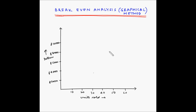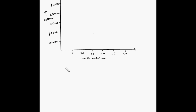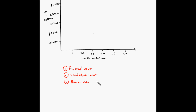Let us look at the break-even analysis using graphical method. On your screen you can see a graph with units sold on the x-axis and the dollar amount on the y-axis. Now we know that there are three main components involved in the break-even analysis: the first one is fixed cost, the second is the variable cost, and the third is revenue. So let us understand how we can plot these three on this graph.